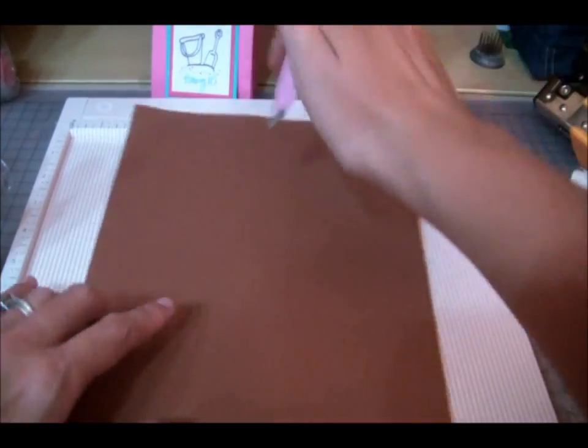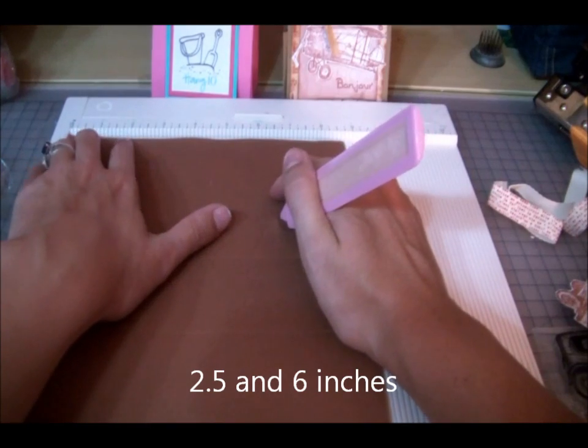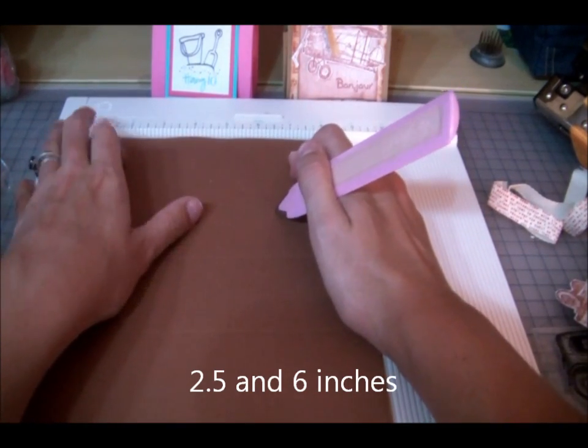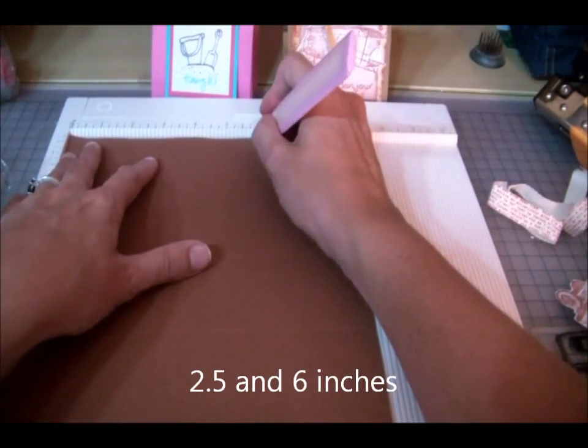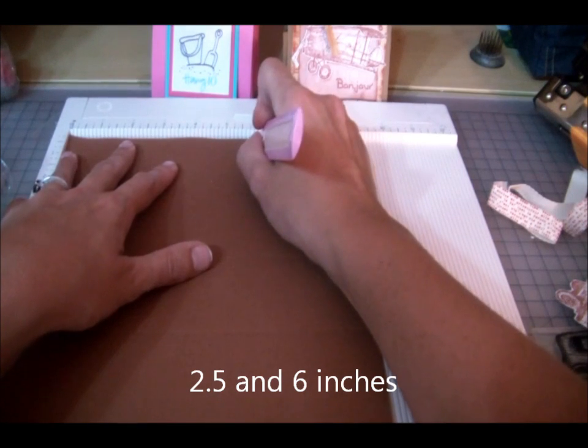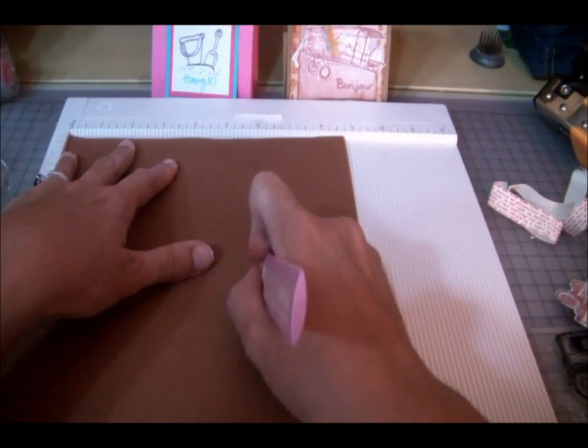And then along your long scores or on your short side it will be at 2.5 and 6. This is the Martha Stewart scoreboard which I love.